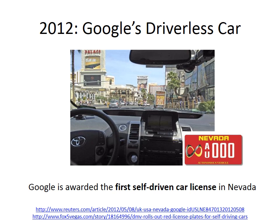Google strayed from the search engine business in 2012 to create the first self-drivable car that was awarded a car license in Nevada. The infinity symbol on the license plate indicates the car is licensed to drive itself. Like IBM's Watson, this achievement highlights other gains made in AI, and it likely won't be long before we find this driverless technology in newer vehicles.